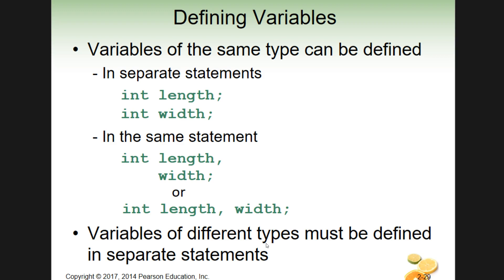You can also do it in the same statement. For example, you can say int and then length, then a comma — even if it drops down to the next line, that's okay — then width. Some people like to do their variables this way, with each one on its own line so they stand out. Other people just comma and roll right across: int length, comma width, semicolon — all on the same line. There are just different ways of doing it.